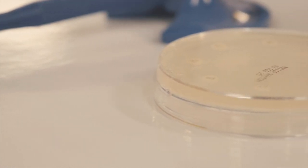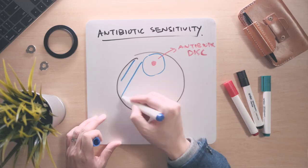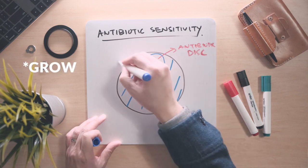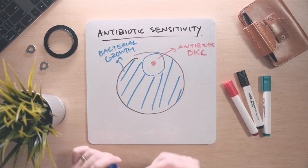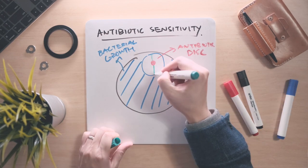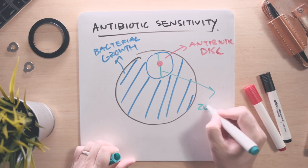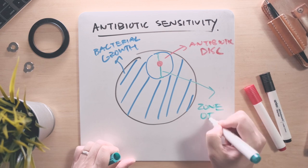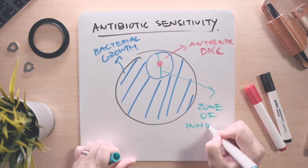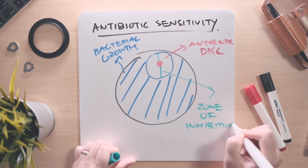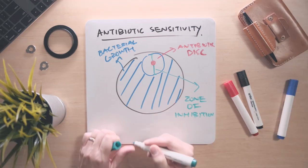After incubating the plate at 37 degrees Celsius overnight, the bacteria will grow on the plate around the antibiotic discs. Where the antibiotic diffuses from the disc into the surrounding agar, there will be a small round patch where the bacteria do not grow. We call this the zone of inhibition.